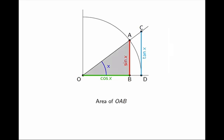The triangle OAB, the sector OAD, and the triangle OCD. Let's do them one at a time. First, the smaller triangle OAB. We know that the area of a triangle is 1/2 of base times height. So in this case, the area is 1/2 of cos(x) times sin(x).